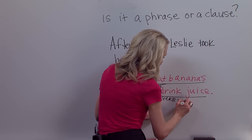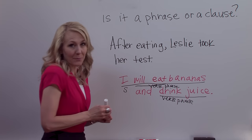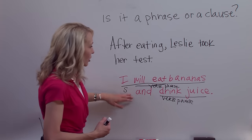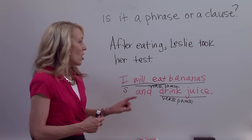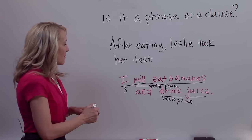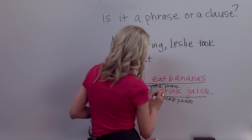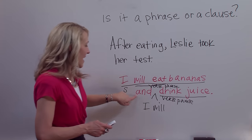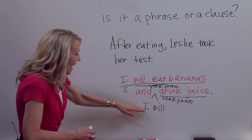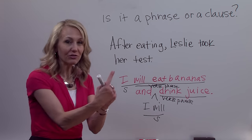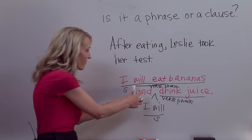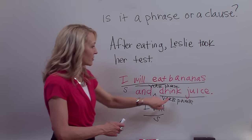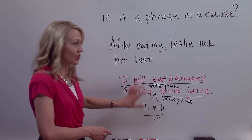And after the fanboy conjunction, 'drink juice' is a phrase — another verb phrase. So 'I will eat bananas and drink juice' is one single clause because it has one subject and a verb. You can have multiple verbs in a clause. However, if I change it to 'I will eat bananas and I will drink juice,' I've introduced another subject with this second verb, giving me a second clause. So fanboy words can connect words, phrases, or clauses — and here I have two clauses.